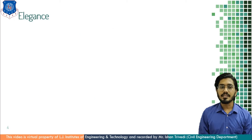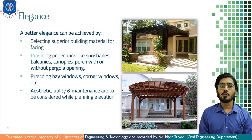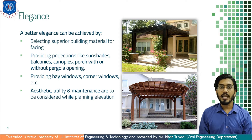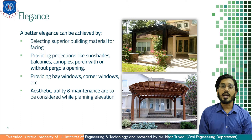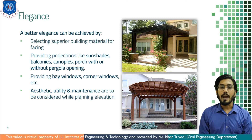Better elegance can be achieved by selecting superior building material for facing such as polished stone of granite, marble or mosaic, glass either transparent or opaque, coloured or plain. By providing projections like sunshade, balconies, canopies, porch, with or without pergola opening — this is how you can achieve elegance.